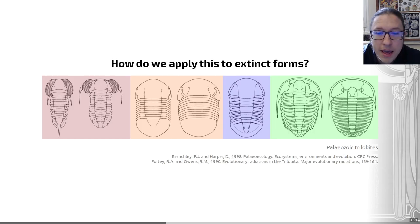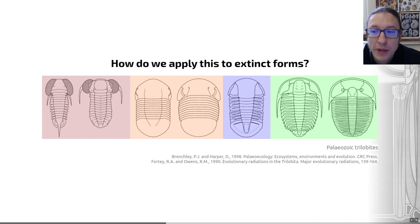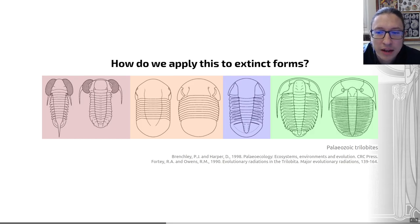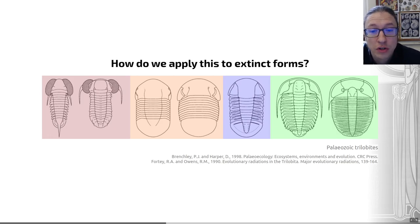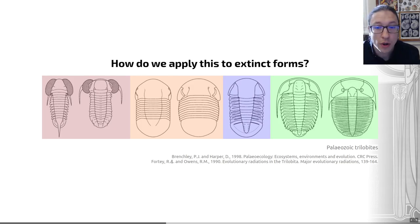This blue trilobite is an example of an atheloptic taxon — species that have reduced eyes. As a result, they obviously didn't rely on vision strongly, and we think that means they probably inhabited deeper water habitats. The final example on the right-hand side are the olenomorphs — trilobites that had thin exoskeletons, which could be associated with life in disaerobic, low-oxygen environments. This is a really nice example of morphological convergence in different groups of trilobites with adaptive significance — a good example of paleo-auto-ecology writ large. These two references will allow you to read more about this.